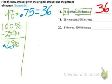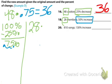18. 28 members and we increase by 50. So we start with 28 and we're going to multiply. But we need to go down here to our percentages.